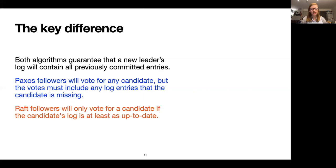Raft, on the other hand, implements this a bit differently. Raft followers will only vote for a candidate if the candidate's log is at least as up-to-date as the follower's. This means that if a candidate gets a majority of votes, its log is already up-to-date.